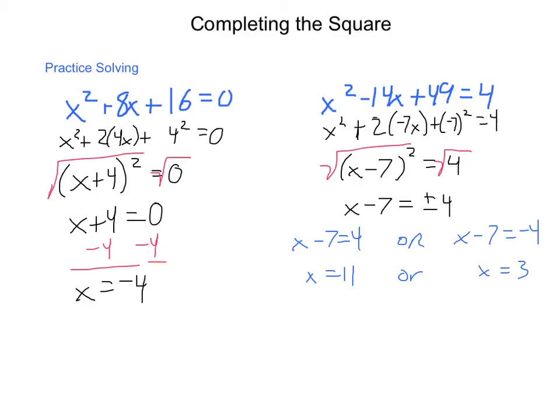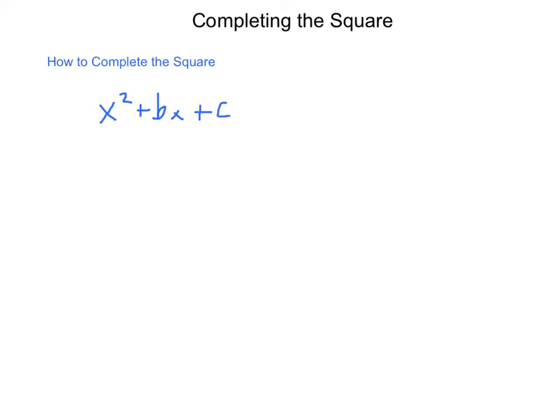Sometimes we just don't have the perfect square trinomial to work with. So there is a way of going through and creating that perfect square trinomial — a process called completing the square. If I start out with an equation x squared plus bx plus c equals 0, in order to complete the square I need to isolate my ax squared plus bx terms, so I'm going to subtract c from each side.